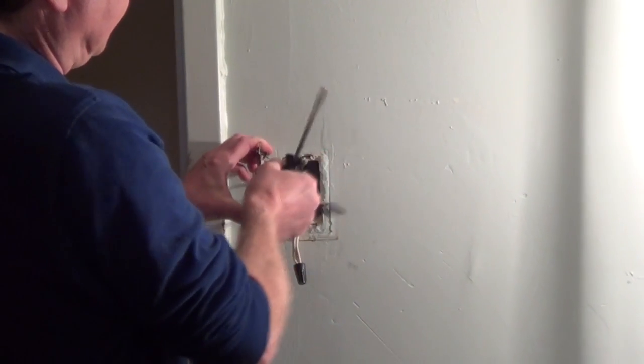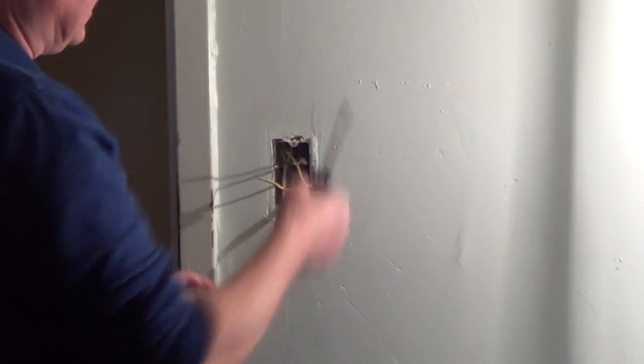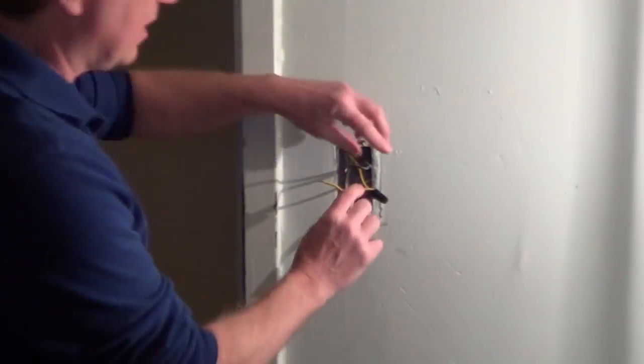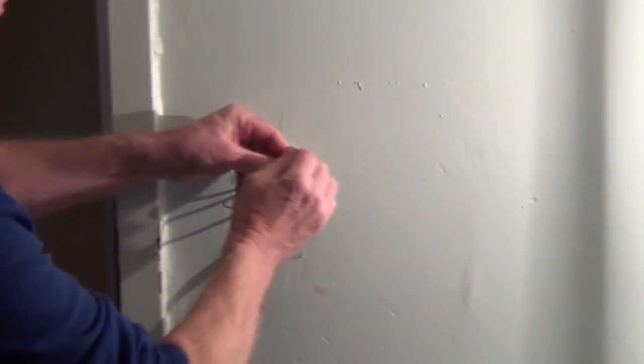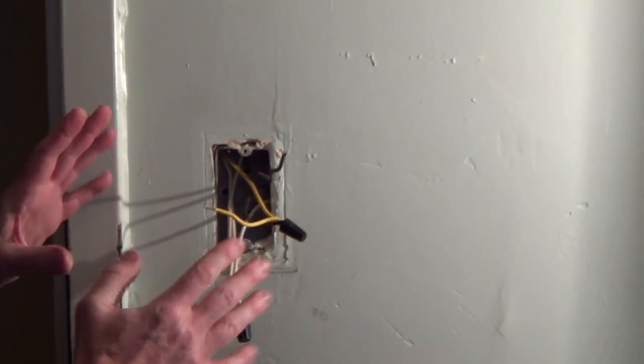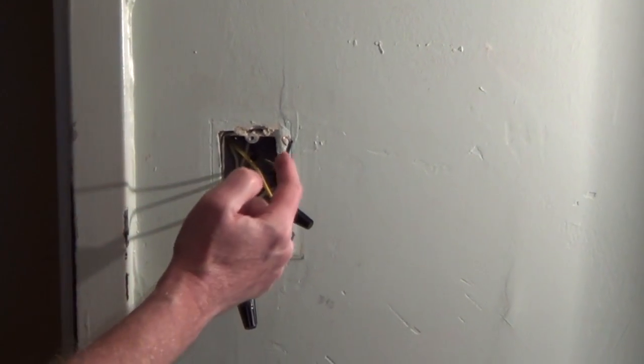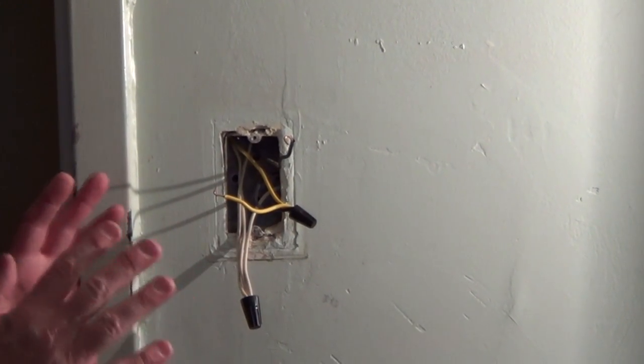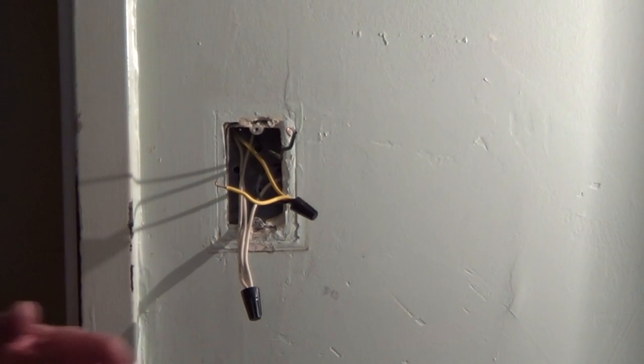In this case I'm guessing which one goes where but what we're going to do now is we're going to separate these wires, make sure they're not touching anything, we're going to turn the electric back on and then we're going to test each wire so that we can confirm which one is coming from the service panel.